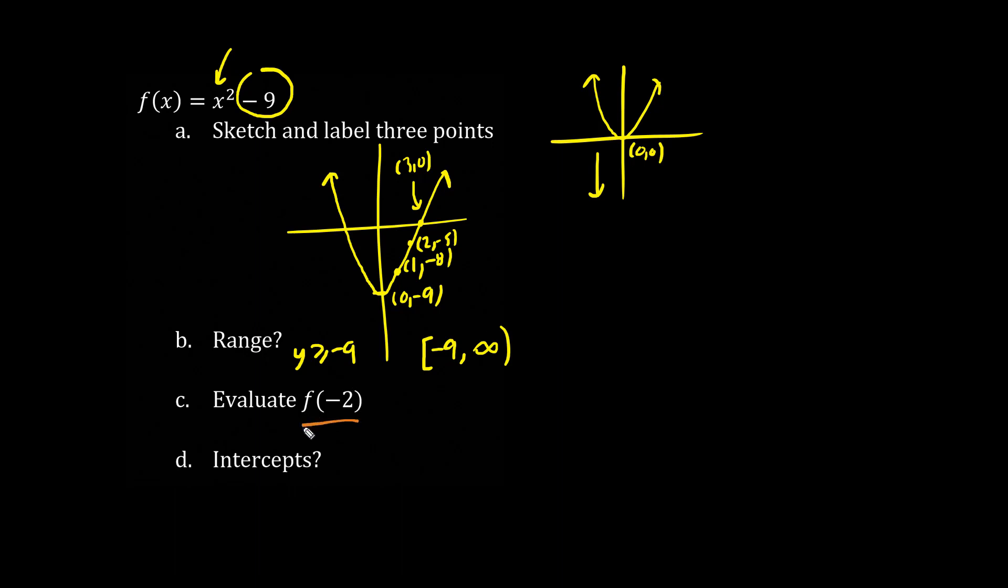Now, what is f of negative 2? This does not mean f times negative 2. This is, what is the y value, the function's y value, when x, the input, is negative 2. So f of negative 2 equals something squared, minus 9, and that something is the input, negative 2. So we have negative 2 squared is 4, minus 9 is negative 5. As we already figured out similarly, across positive 2, negative 5, we have negative 2, negative 5.